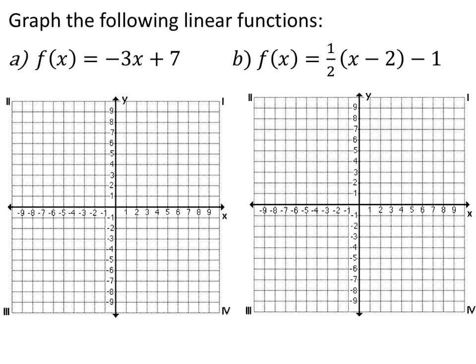So here we have two lines. Go ahead and pause the video and graph these two lines. So the first one's in slope-intercept form, so 7 is your y-intercept, so I plot that here. And then you have a slope of negative 3, so this is decreasing.